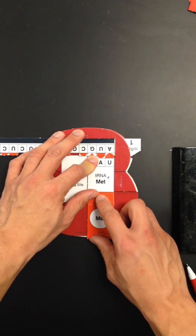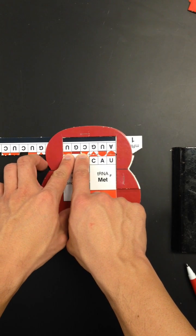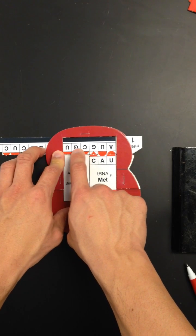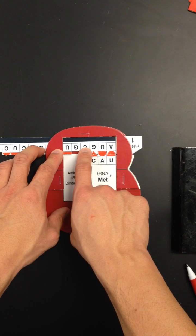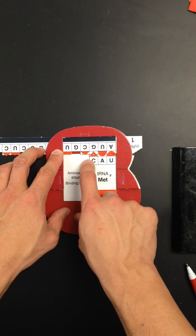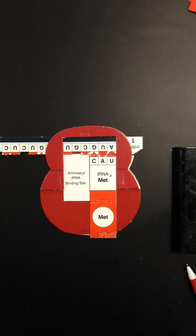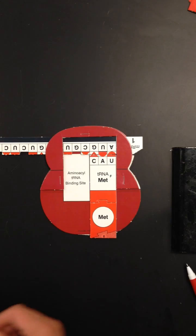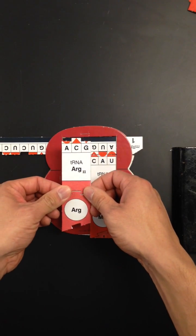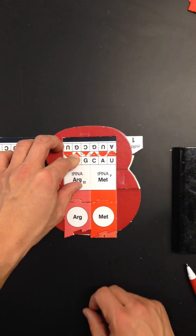My second codon gives me a triplet code of cytosine, guanine, and uracil. So I need to find an anticodon that matches up. So this would be G, C, and A. I'll take a look at my pile of transfer RNAs and amino acids, and I'll notice that I have one here. So I'm going to then snap this into place.